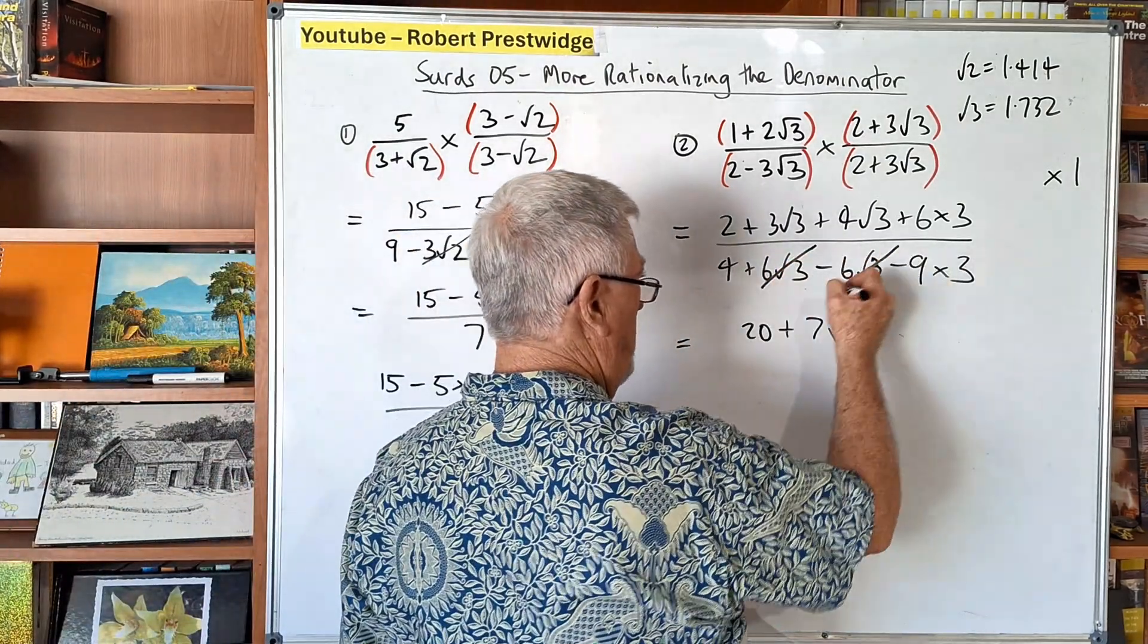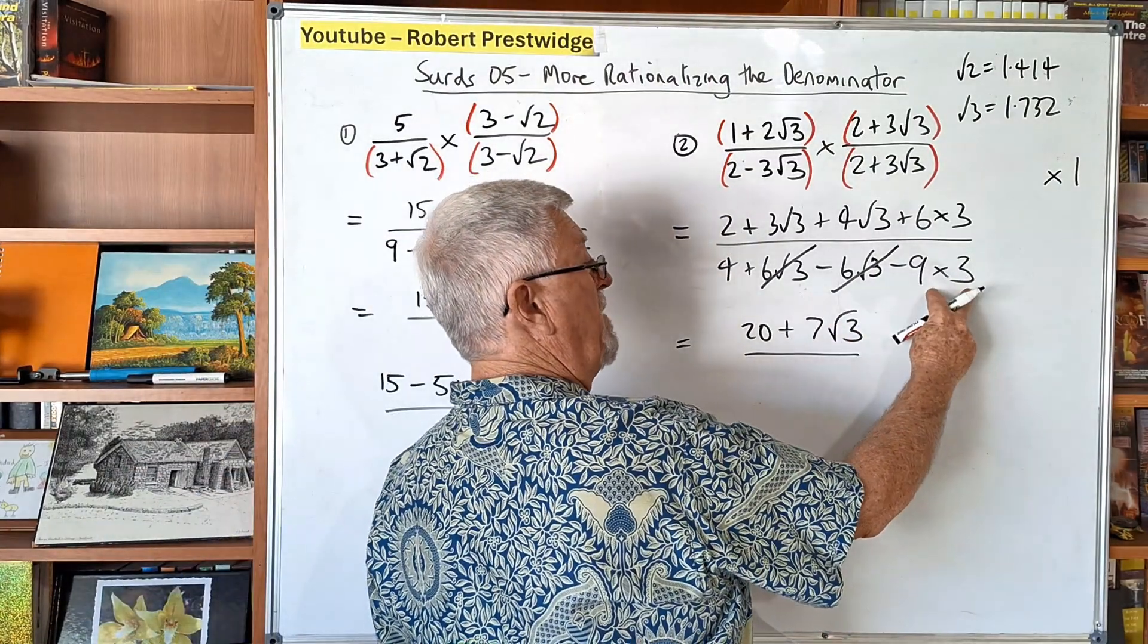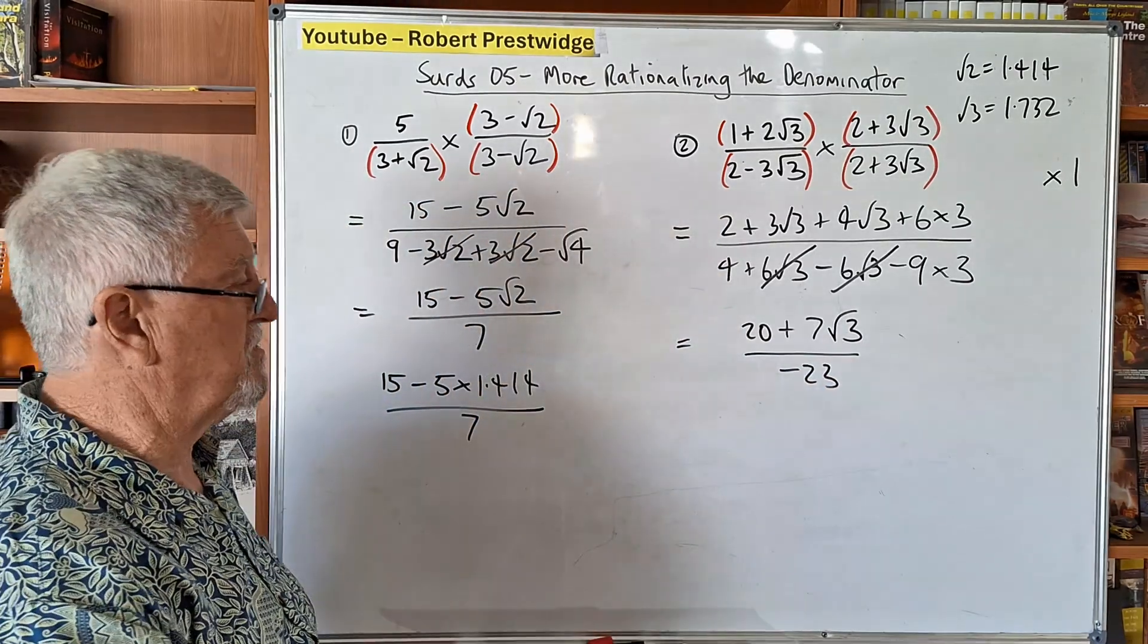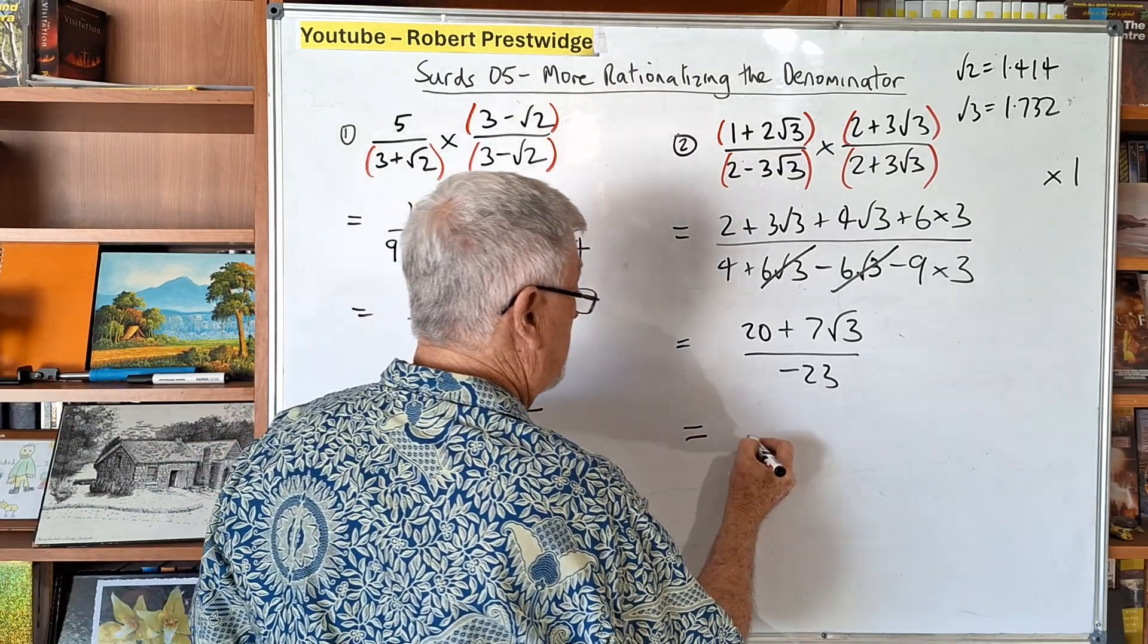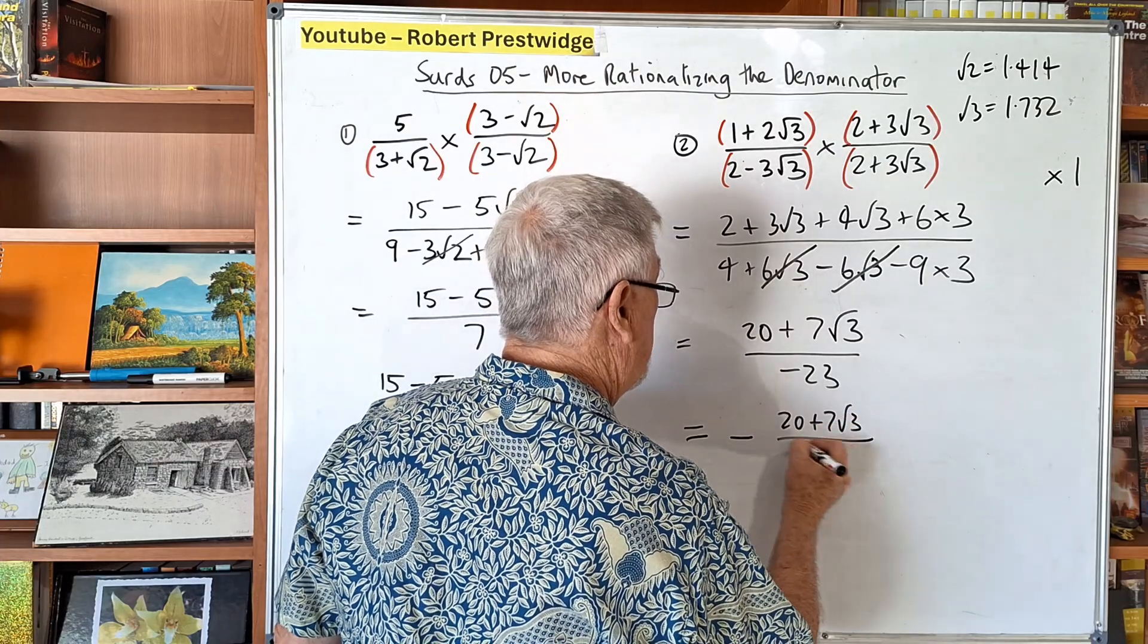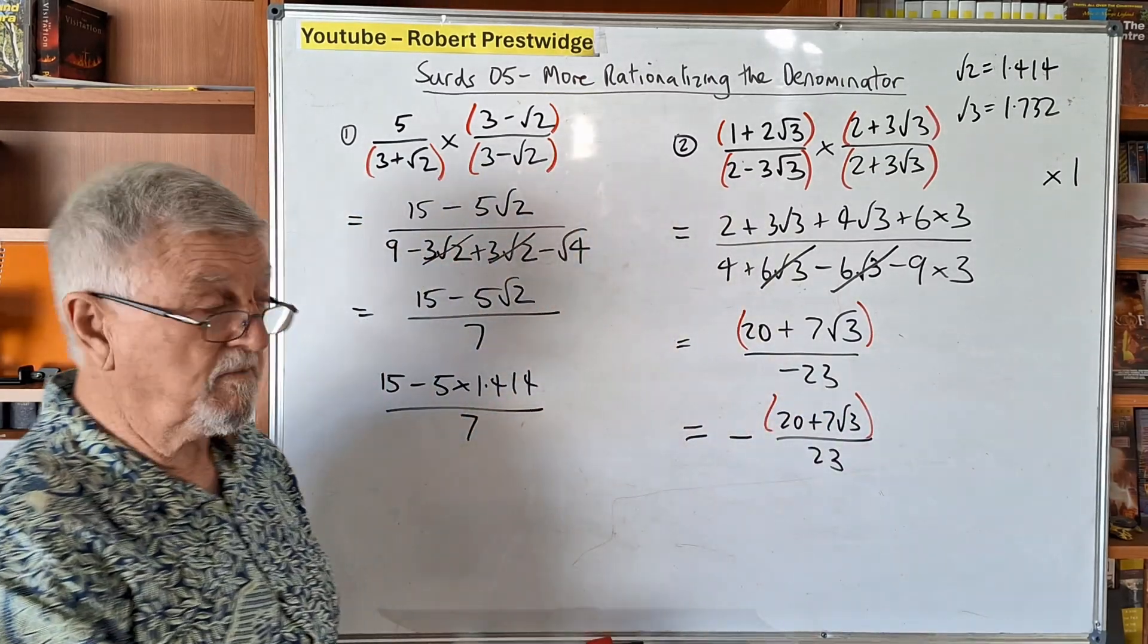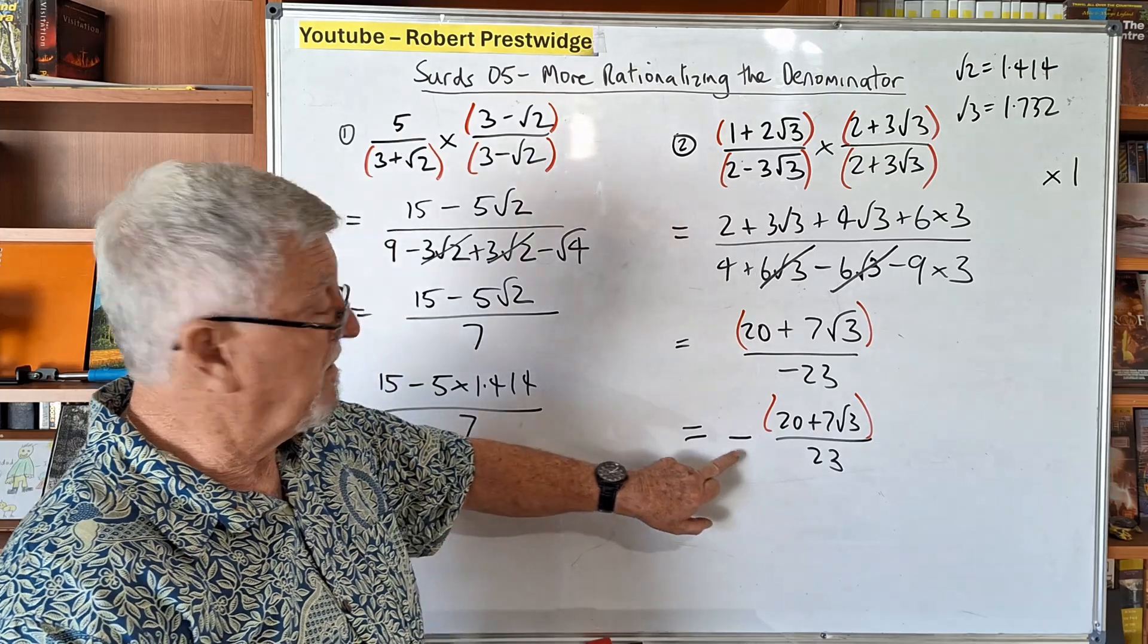On the bottom, those two eliminate each other. And we've ended up with a 4 subtract a larger amount. So 4 take 27, that's minus 23. Now there are people out there who don't like the minus being written there, and they'll put it out the front. So they'll write minus 20 plus 7 root 3 over 23. And you go, is that the same? Yes, because this has a bracket around it. It doesn't matter if you're writing the minus here with the bracket or here or out the front.